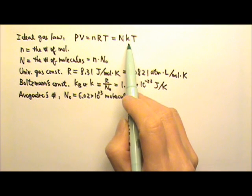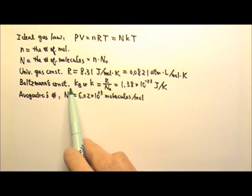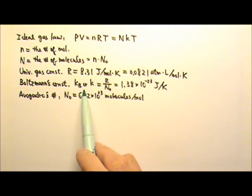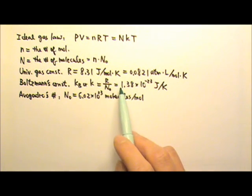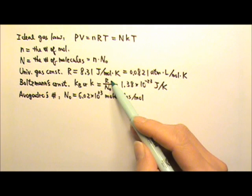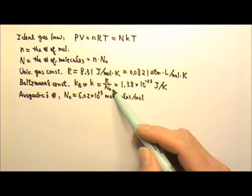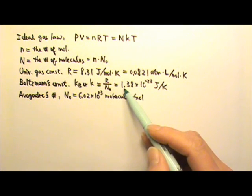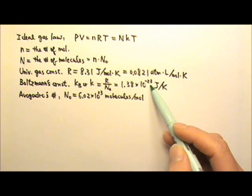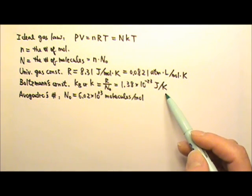This lower case k is called Boltzmann's constant. We can write k sub b or k for it. Boltzmann's constant equals the gas constant divided by Avogadro's number, and it equals 1.38 times 10 to the negative 23 joules per Kelvin.